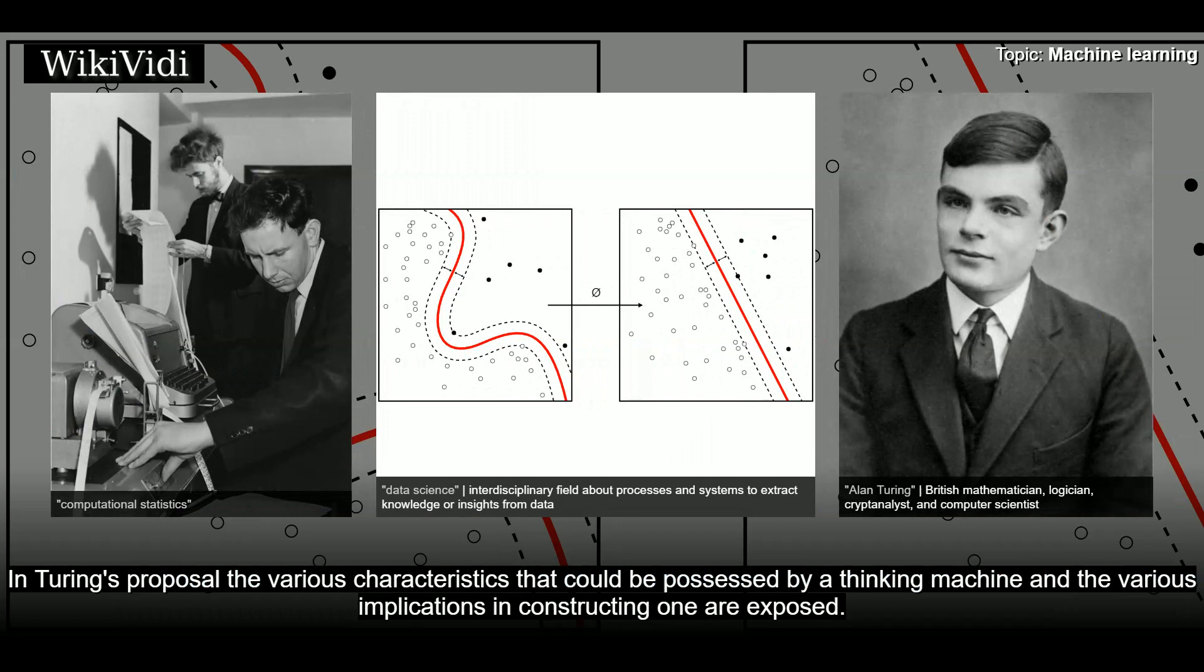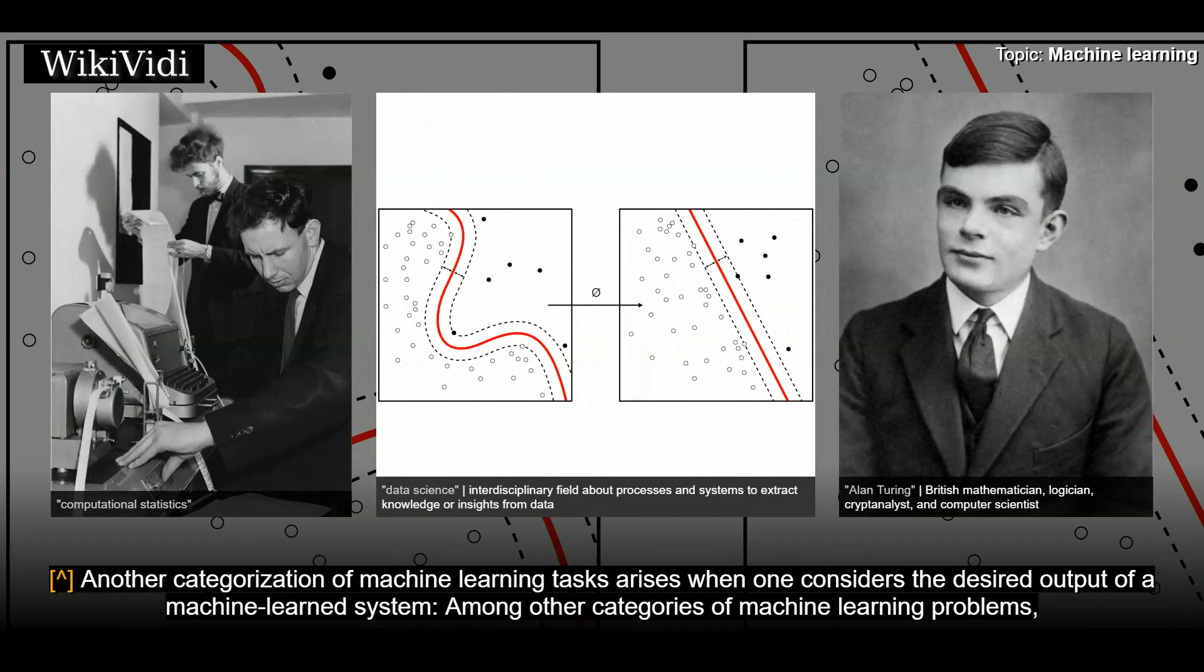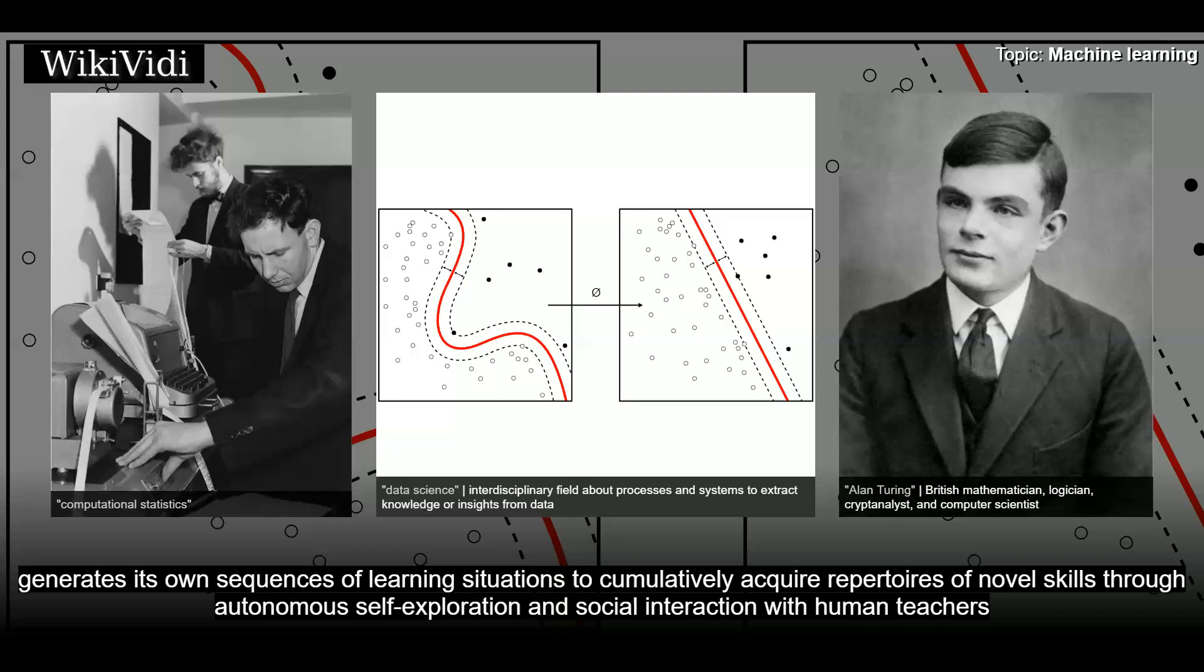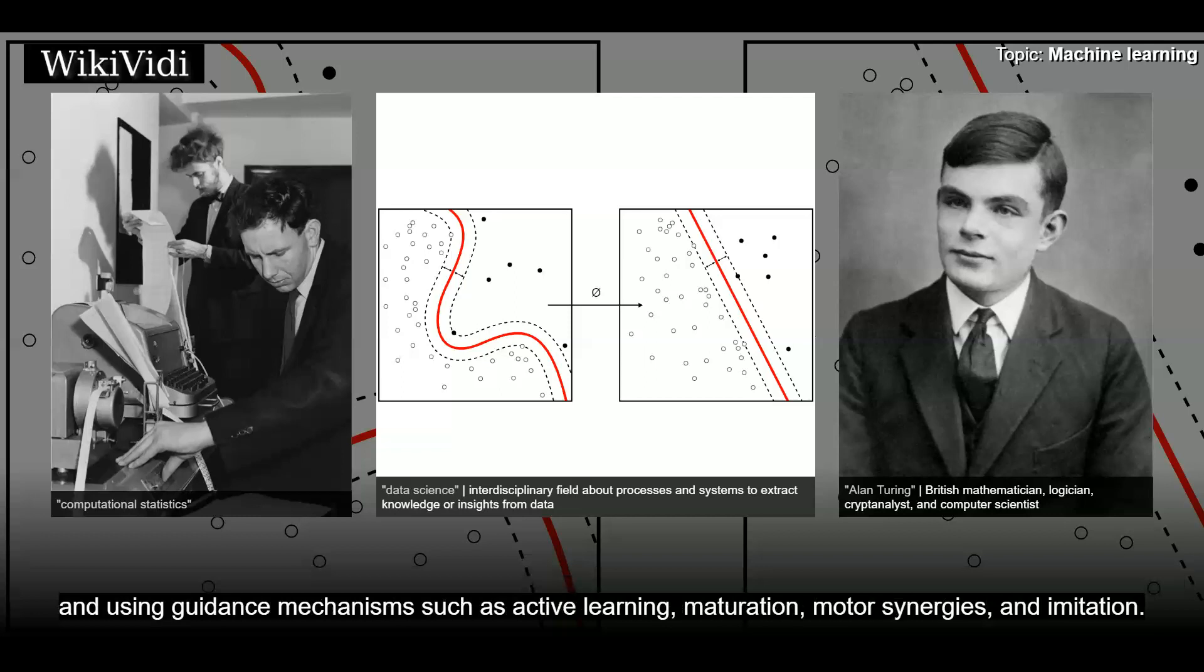Machine learning applications. Another categorization of machine learning tasks arises when one considers the desired output of a machine-learned system, among other categories of machine-learning problems. Learning to learn learns its own inductive bias based on previous experience. Developmental learning, elaborated for robot learning, generates its own sequences of learning situations to cumulatively acquire repertoires of novel skills through autonomous self-exploration and social interaction with human teachers, and using guidance mechanisms such as active learning, maturation, motor synergies, and imitation.